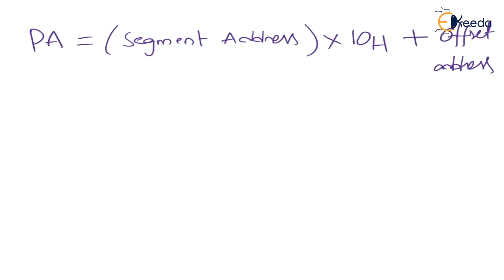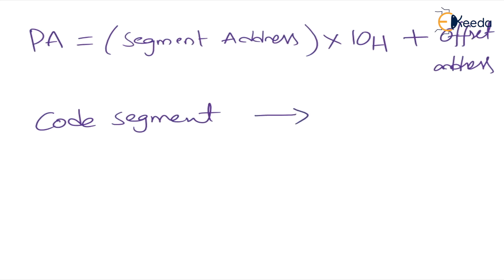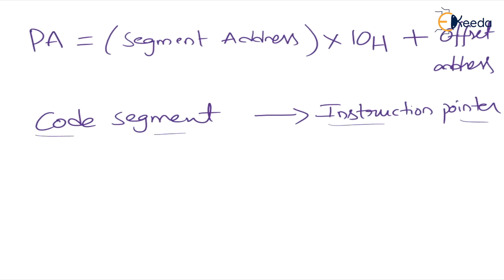Each segment register is paired with one offset register. For the code segment, the offset address will be available in the instruction pointer. The address will be located in the instruction pointer. For code segment, the default offset address is in the instruction pointer.